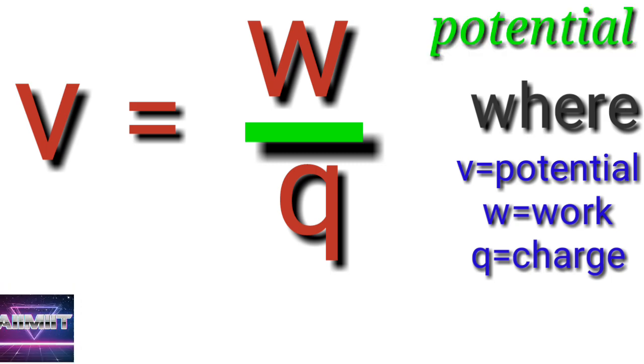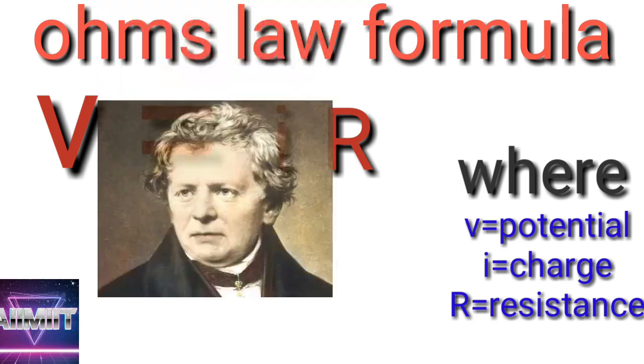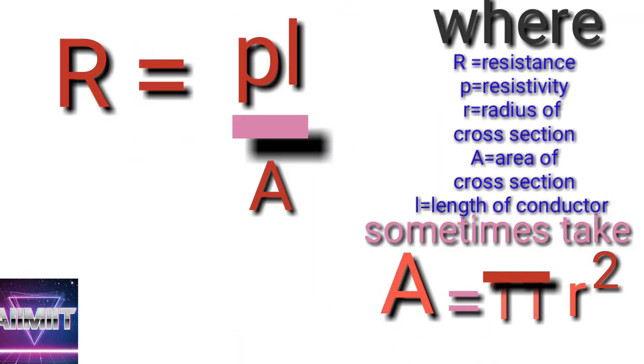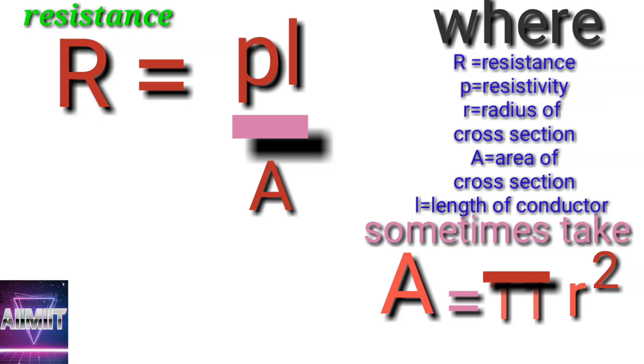Number four: V = IR from Ohm's law, where V is potential, i is current, R is resistance. Number five: R = ρl/A, where R is resistance, ρ is resistivity, l is length, A is area. Sometimes we can take A as πr² also.